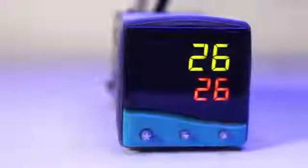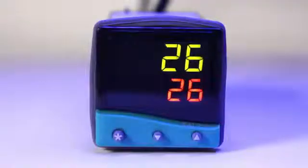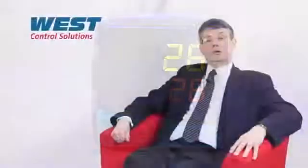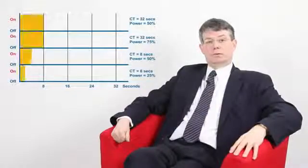There are some processes where it is not appropriate to use proportional control. For example, if you have a refrigerator and you're switching the compressor, you would have to use on-off control. A compressor cannot be turned on and off frequently, as would happen with proportional control. Even if the cycle time was set long, it would still switch more often than would be desired.